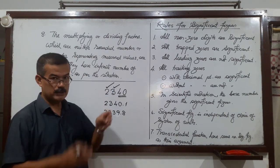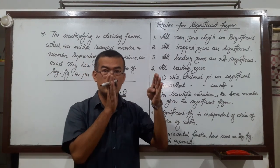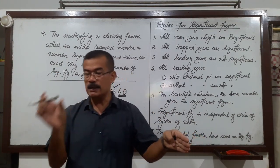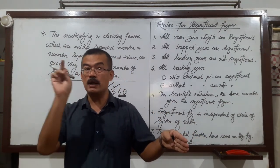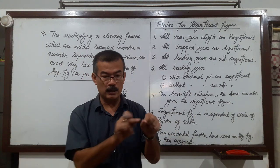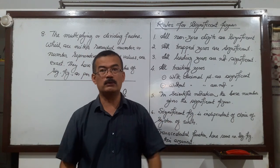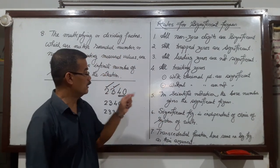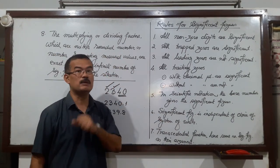The certain reliable digit plus the uncertain digit — the total number of digits — is what makes a digit significant. Even a number with one uncertain digit counts as significant.